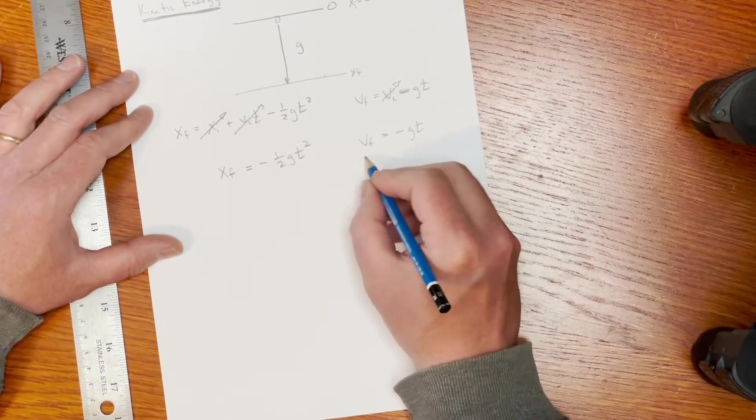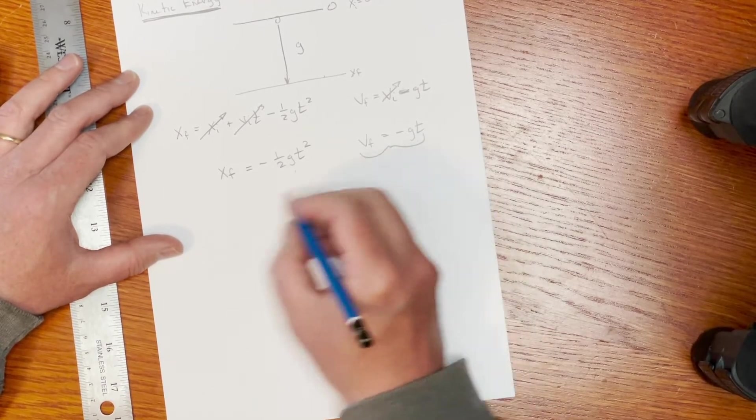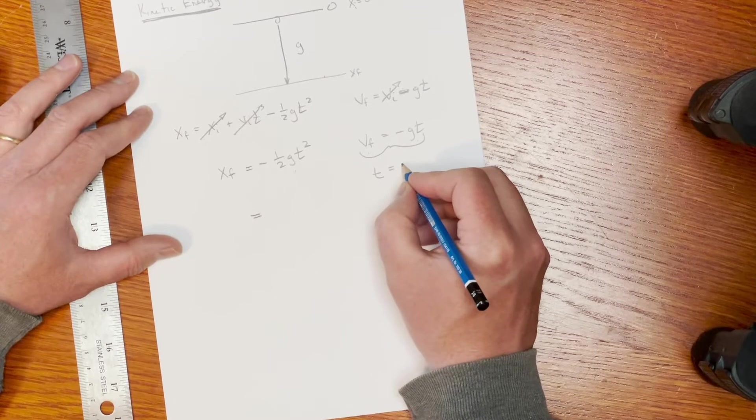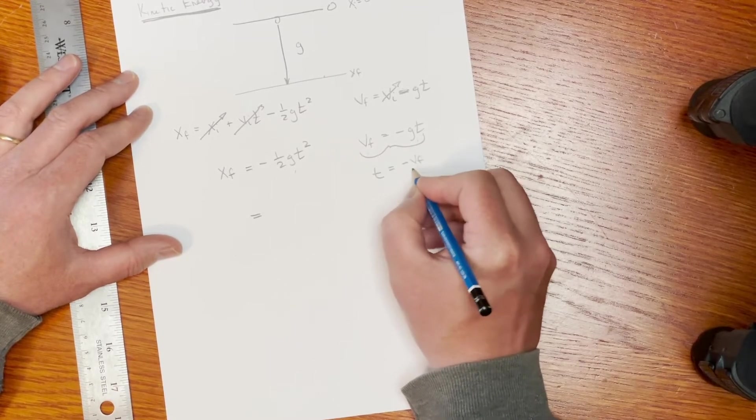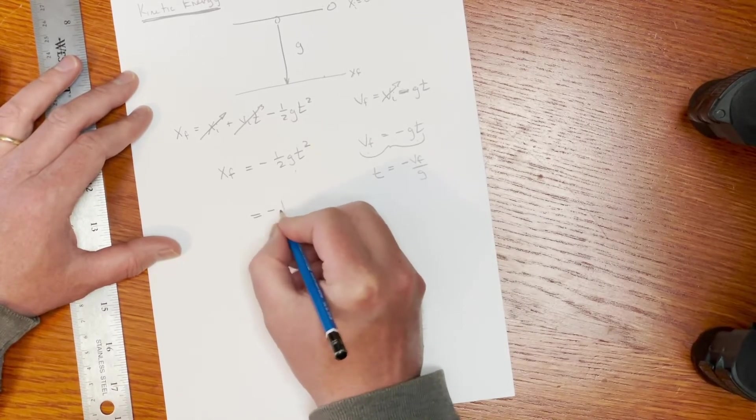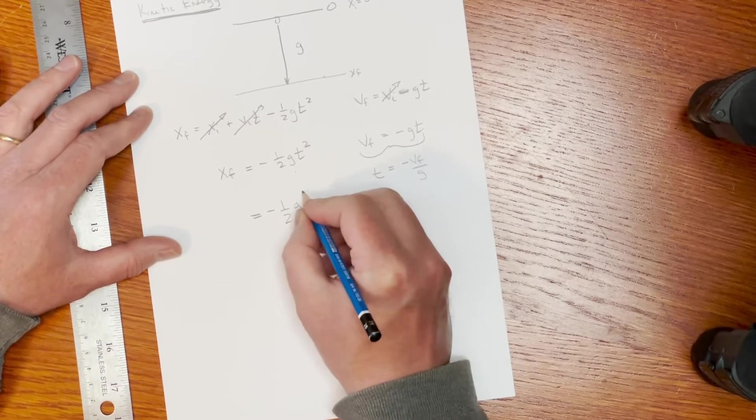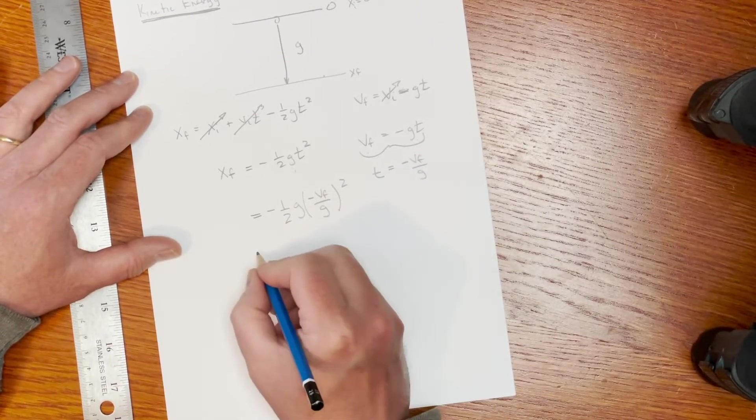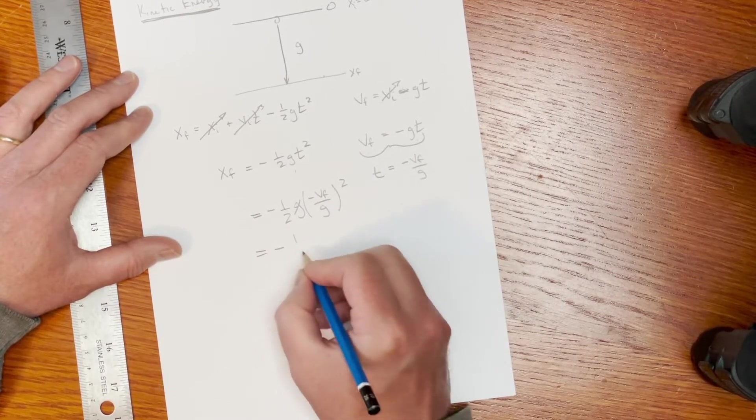So now I'm going to solve this equation for t and put it in here. And if I do that, this is just t is equal to minus v_f over g. So this becomes minus one half g times minus v_f over g squared. One of those factors of g is going to go away.